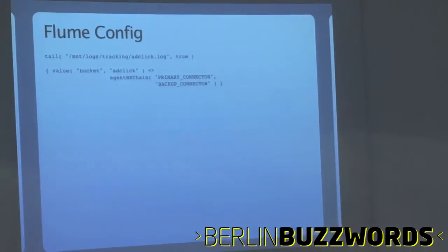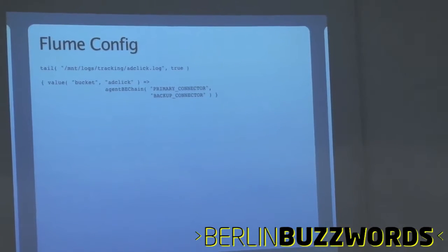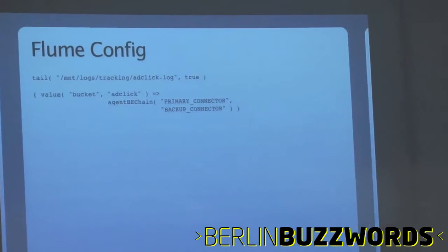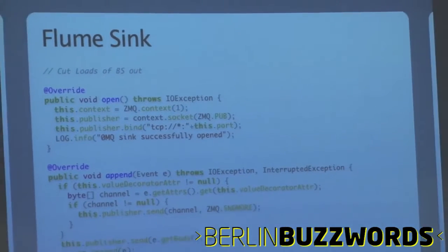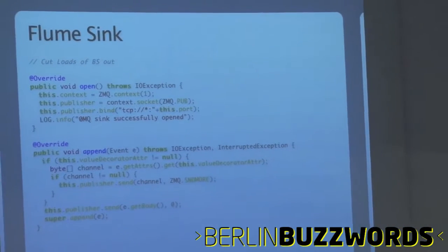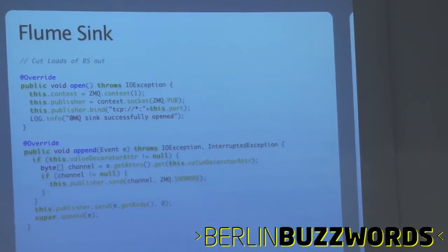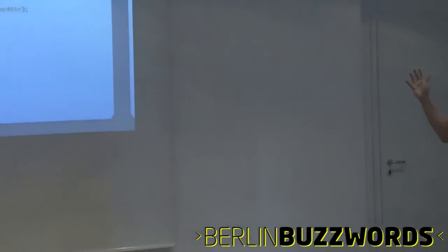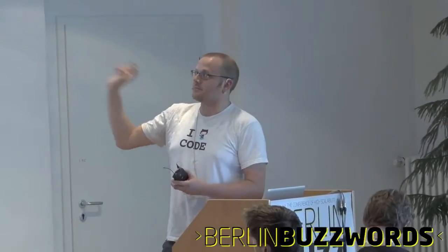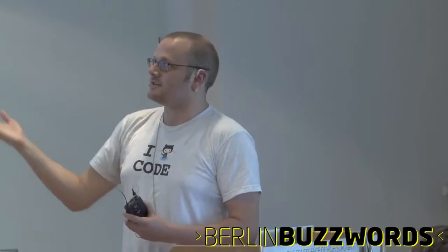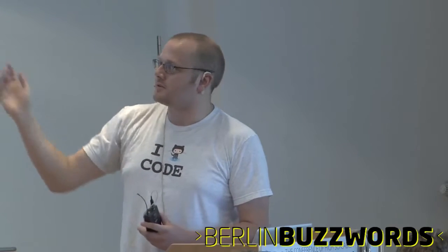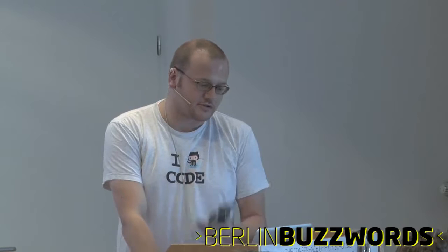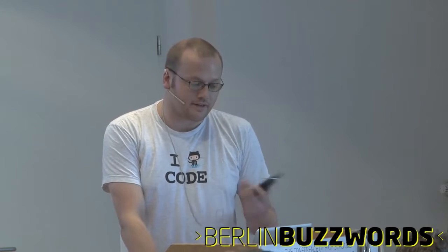Our Flume config is simple — we had a bucket decorator called add click in this instance, tailing a log and sending it to the Flume collector. For the Flume sync implementation, there are three methods you need to write: an open, a close, and an append. When you open and instantiate 0MQ, you create a context, a socket of a particular type, then bind to one of the transports. Here we're taking TCP connections on port 5555 as specified in the config. The close method destroys the socket then terminates the context.